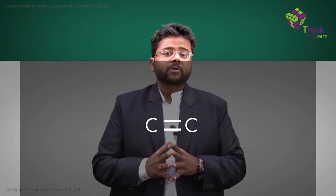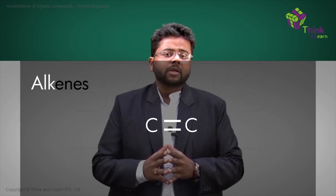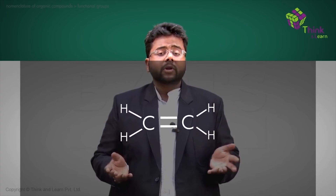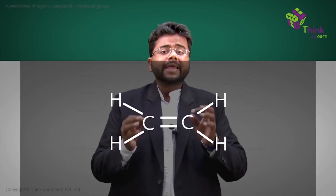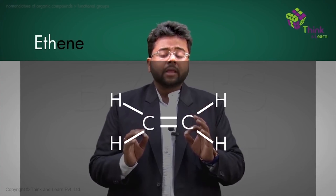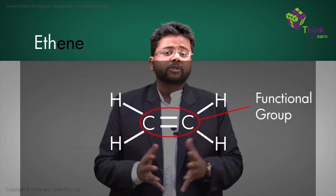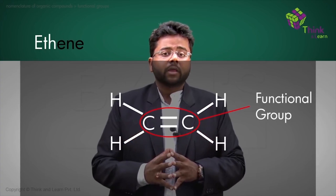The simplest functional group that we have is a carbon-carbon double bond, and this class of functional group is called alkenes. For example, C double bond C with two hydrogens — this is called ethene, and the double bond is the functional group here.